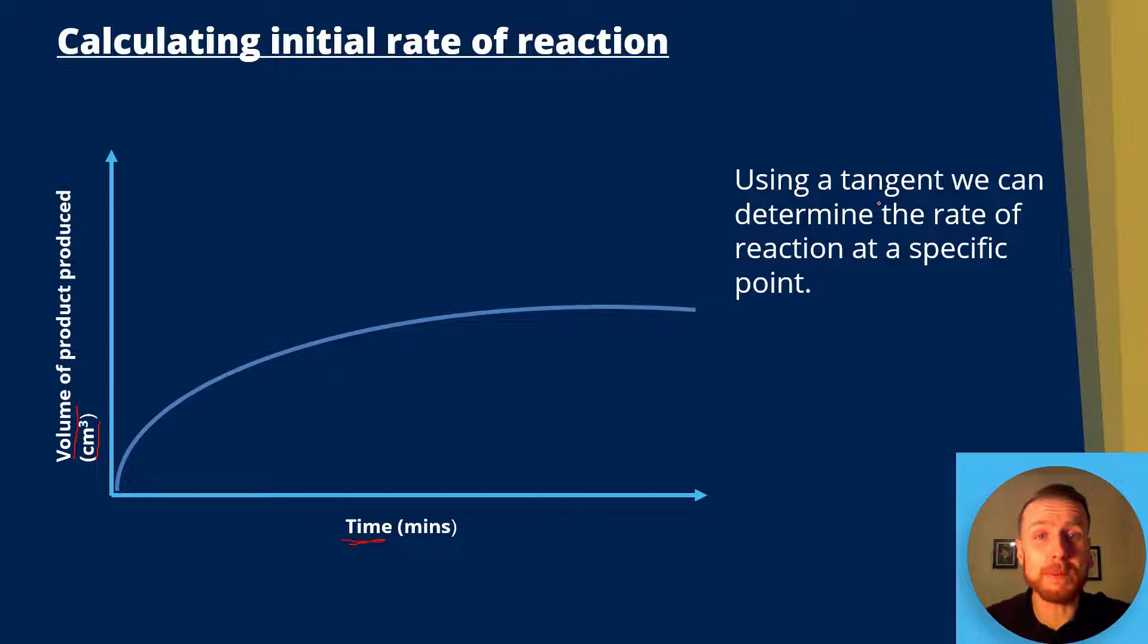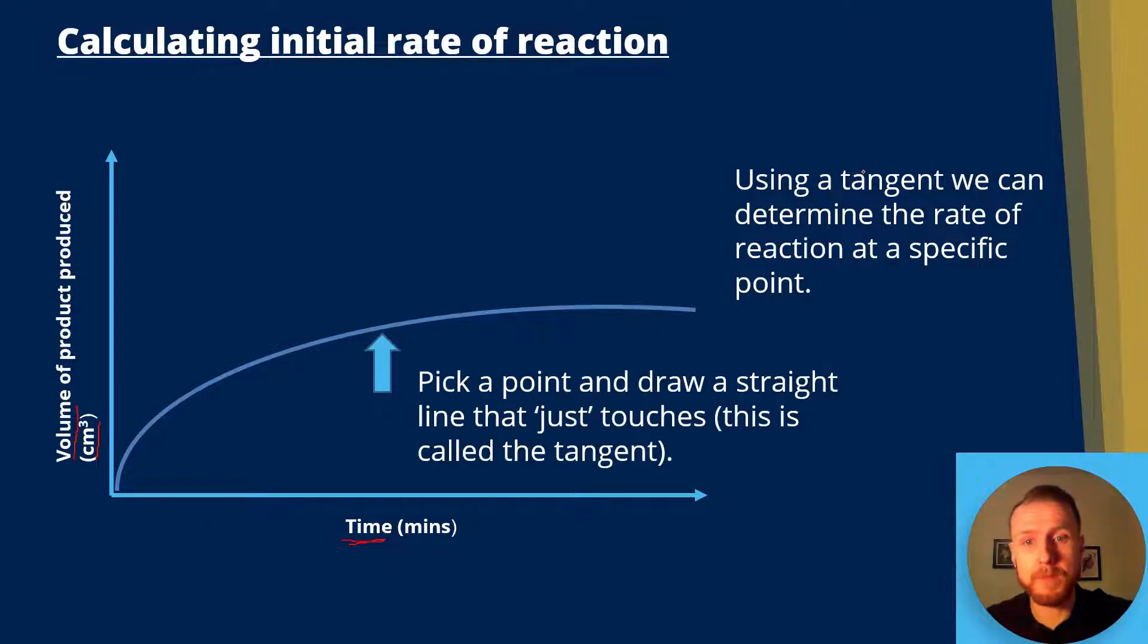Using a tangent, we can determine the rate at a specific point. So if I choose this point here, what we can do is pick that point and draw a straight line that just touches. And we call this the tangent. So here's a tangent.